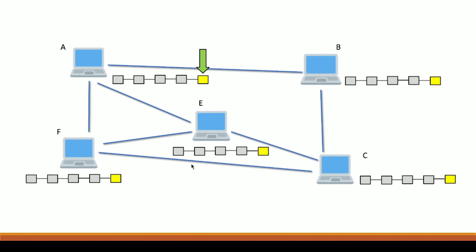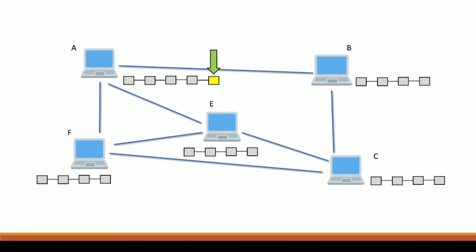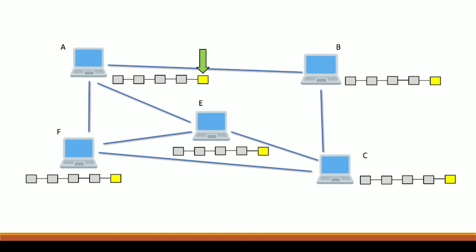All of these people have added the block created by A to their blockchain. This is how blockchain is distributed in nature — you can clearly see the block is getting distributed all across the network. That's why we call blockchain a distributed immutable ledger.